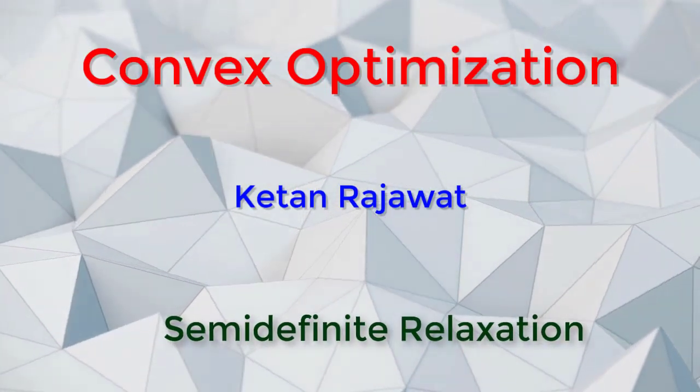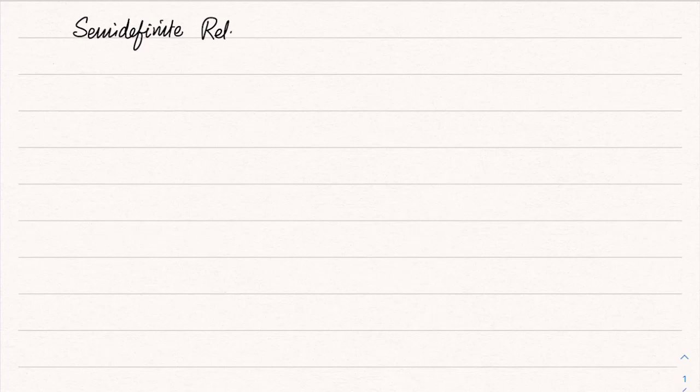We look at semi-definite relaxation, which is an interesting technique that allows us to generate approximate solutions to a big class of quadratic constrained quadratic programs (QCQPs). These QCQPs can be non-convex, they can include integer programs — it's a big class of problems which can be modeled as QCQPs. So consider this problem: this is the homogeneous QCQP.